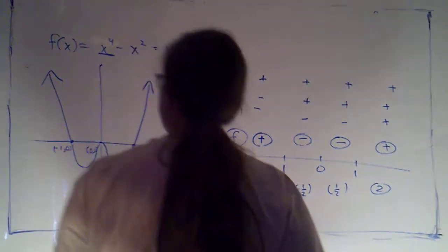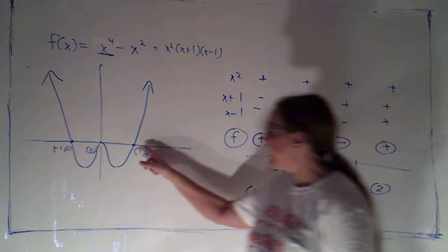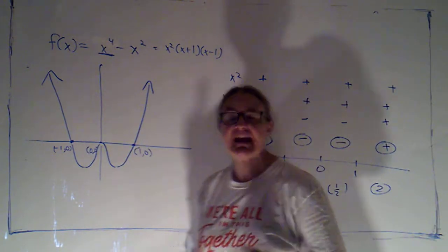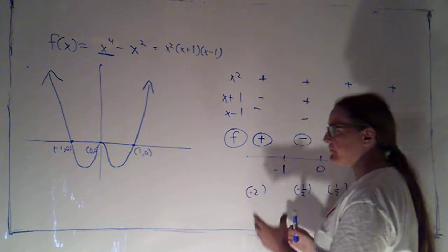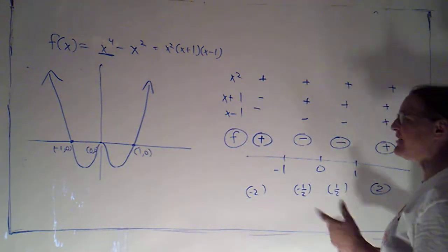I've still got this example up here because I want to talk a little bit about the behavior of the graph at the x-intercepts. The x-intercepts are, of course, the points whose x-values are the zeros of my function and the y-value is zero.